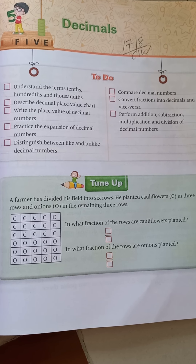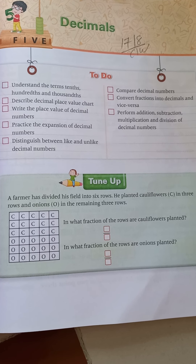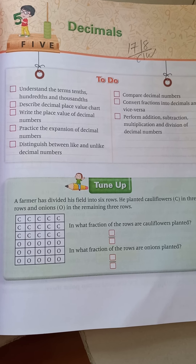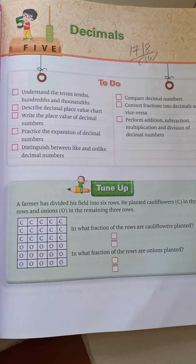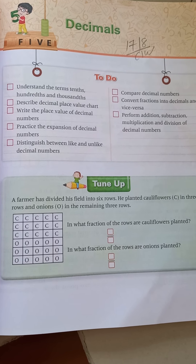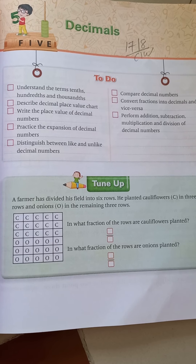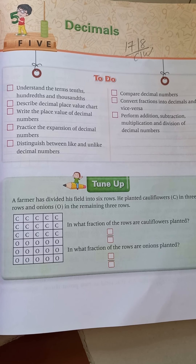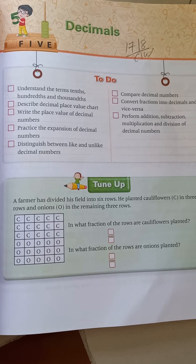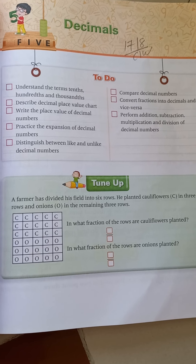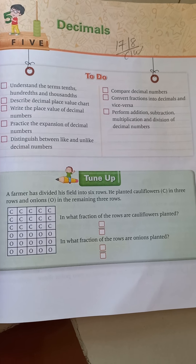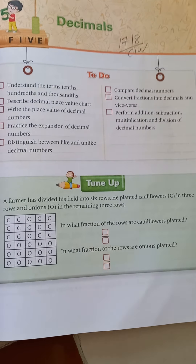Now, what do you mean by decimals? As you know, and as you learned in chapter number 4 on fractions, whenever your denominator is 10, 100, or 1000, at that time we write the number with a point — that is one type of decimal.